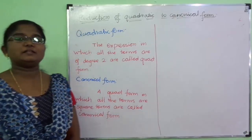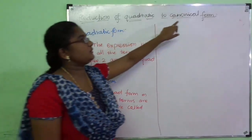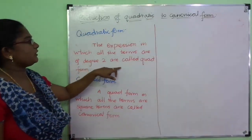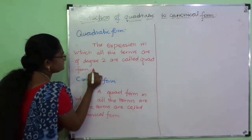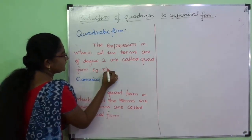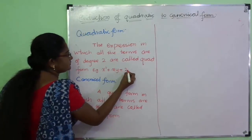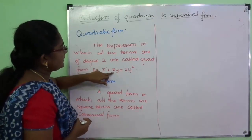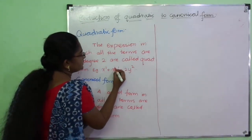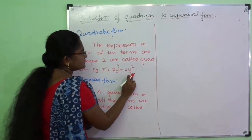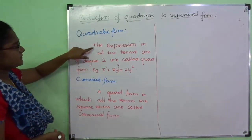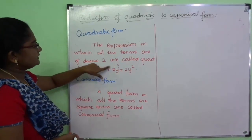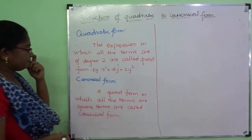In this video let's see about reduction of quadratic form to canonical form. First of all, what is quadratic form? The expression in which all the terms are of degree 2 is called quadratic form. For example, x squared plus xy plus 2y squared — in this expression, x has power 2, xy has powers 1 plus 1 equals 2, and y has power 2. All terms are of degree 2, so this is a quadratic form.